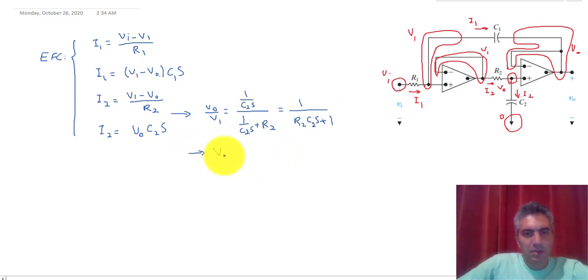Now therefore I can calculate V1 as a function of Vout. So V1 is equal to Vout times 1 plus R2C2s.